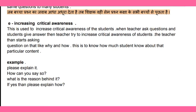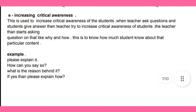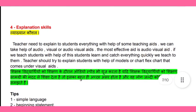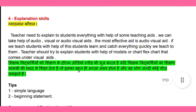Fifth is increasing critical awareness — this is used to increase the critical awareness of students. The teacher asks questions like 'why' and 'how' to know how much a student understands the topic. The teacher can ask questions like 'please explain it', 'how can you say so', or 'what is the reason behind it'.